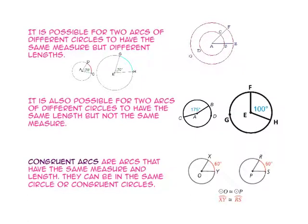Congruent arcs are arcs that have the same measure and the same length. They can be in the same circle or in congruent circles.